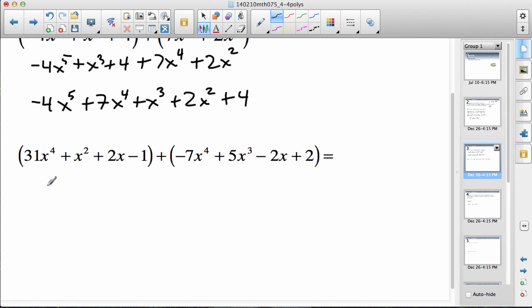This one I'm going to try and just do in my head rather than drop the brackets. I'll drop them in my head and try it. Here's an x to the fourth, that looks like the highest degree. 31 take away 7 would be 24x to the fourth. Any x cubed? Yeah, there's one, so plus 5x cubed.